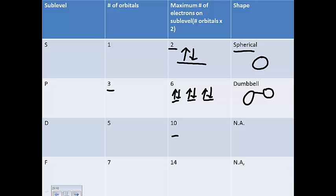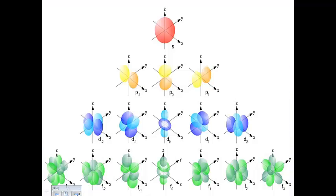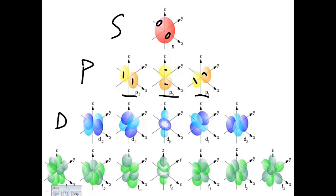The D sublevel has five orbitals — we won't be concerned with the exact shape because it's complex, almost like two different dumbbells. The F sublevel has seven orbitals, and its structure is even more complex. Looking at diagrams: the S orbital is a sphere holding two electrons; P has three dumbbell-shaped orbitals each holding two electrons; D has five orbitals; and F has seven orbitals following the same principle.